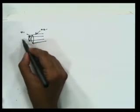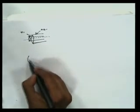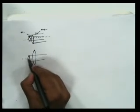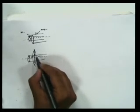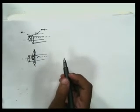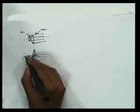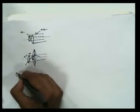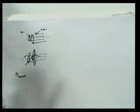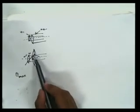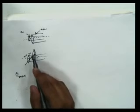The core refractive index is n1, the cladding refractive index is n2, and here is the central axis. At the air-core interface I have the incident angle, and at the core-cladding interface I need total internal reflection. That angle at core-cladding must be greater than or equal to phi_c. In order to have this angle greater than or equal to phi_c, I need a maximum angle called theta_max at the air-core interface. We do not need total internal reflection at the air-core interface — we need total internal reflection at the core-cladding interface.